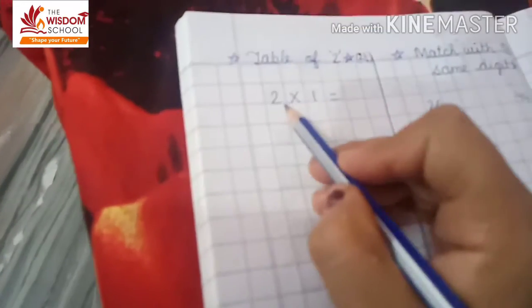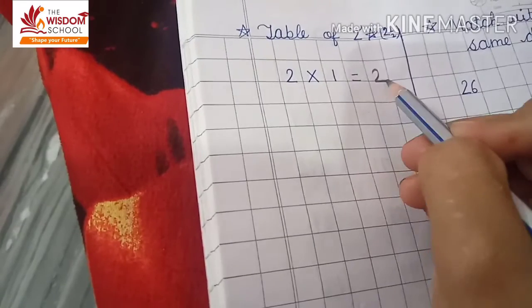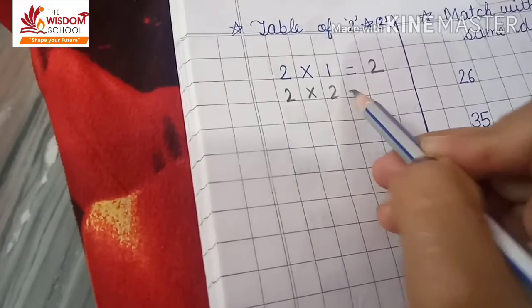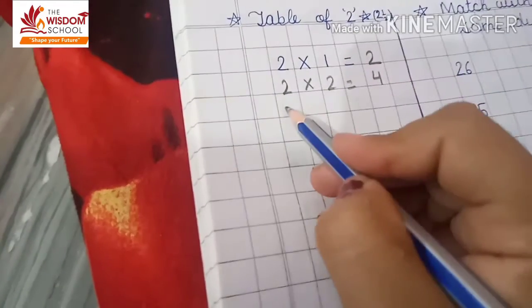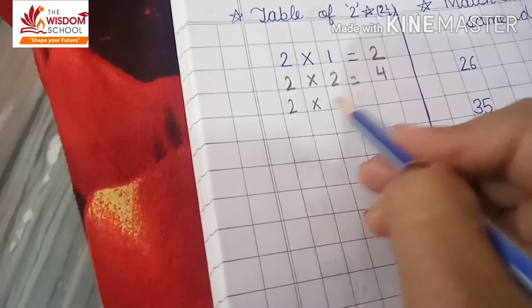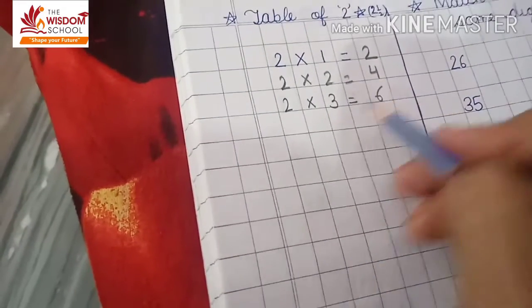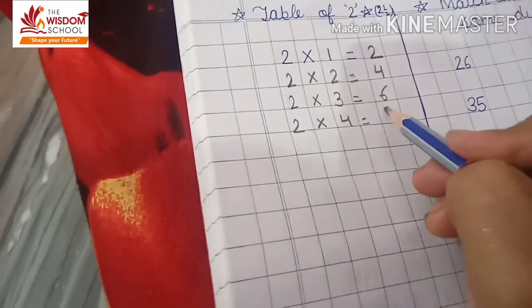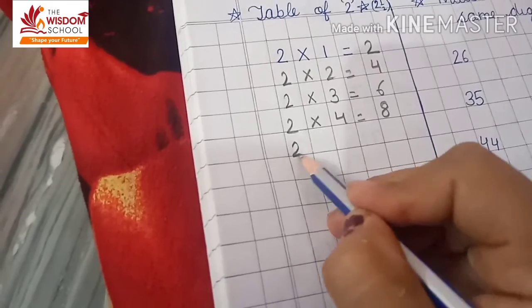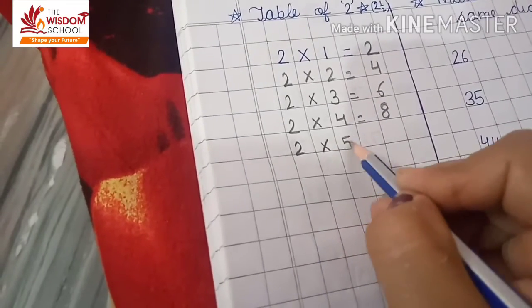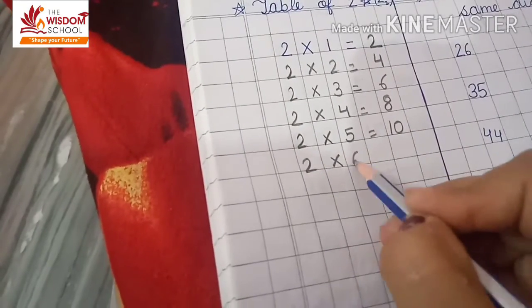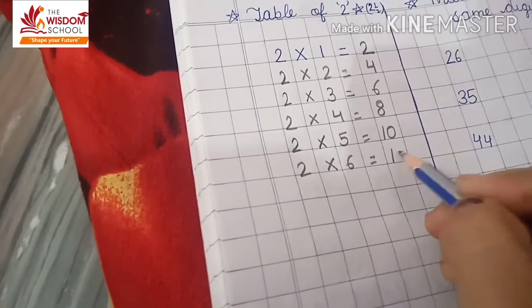Now we will write the table of two. Two one ja — two. Two two ja — four. Two three ja — six. Two four ja — eight. Two five ja — ten. Two six ja — twelve.